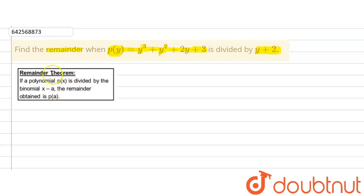Now what we are going to use here is the remainder theorem. Remainder theorem says that if a polynomial P(x), in this case we have P(y), is divided by the binomial x - a, in this case we have the binomial y + 2, the remainder obtained is P(a).